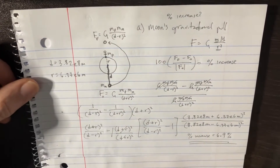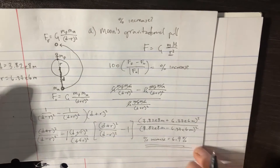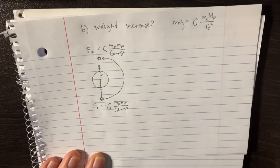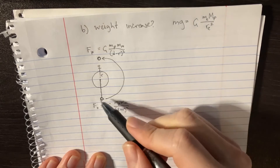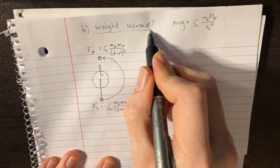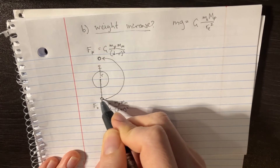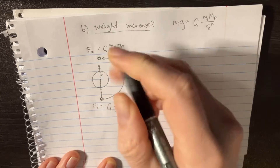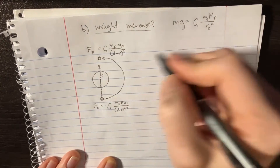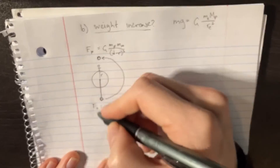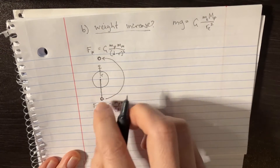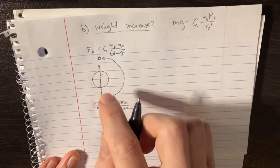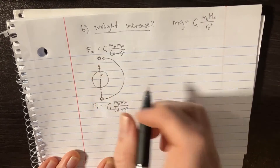Now we also have to solve for part B. Let's redraw that picture. In part two we're going to be looking at the weight increase as the moon goes from the opposite side to our side. The interesting thing is we're going to have two terms in our weight, because weight is not just the moon's force on you — we also have to take into consideration the earth's effect on us.